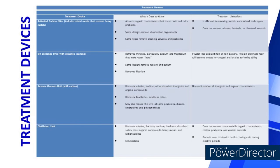If water has oxidized iron or iron bacteria, the ion exchange resin can become coated or clogged and lose its softening ability. Reverse osmosis unit (carbon) — removes nitrates, sodium, other dissolved inorganics, and organic compounds; removes foul taste, smells, and colors; and may also reduce the level of some pesticides, dioxins, chloroform, and petrochemicals. Limitation: does not remove all inorganic and organic contaminants.